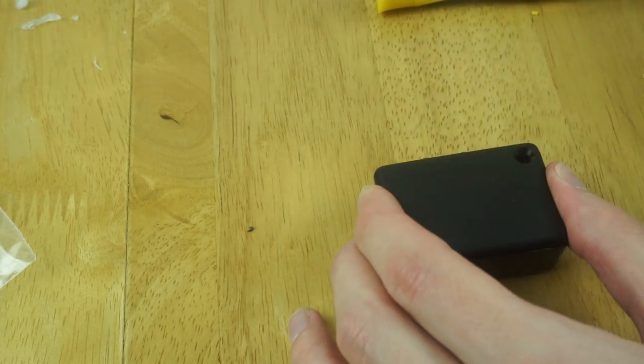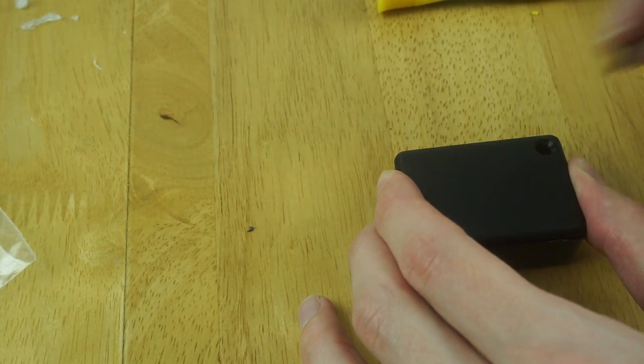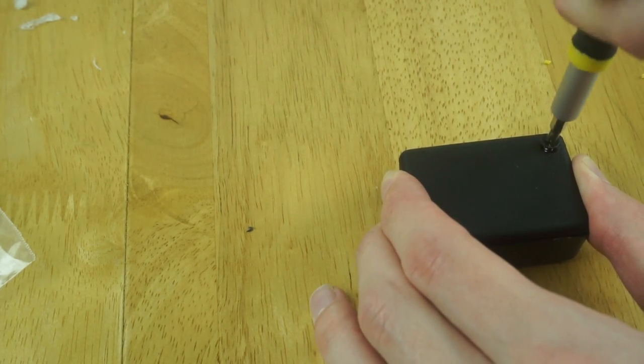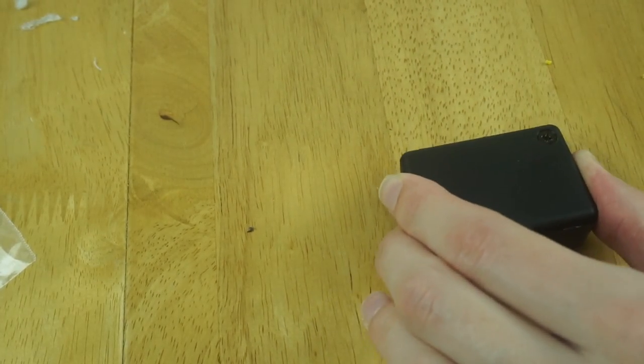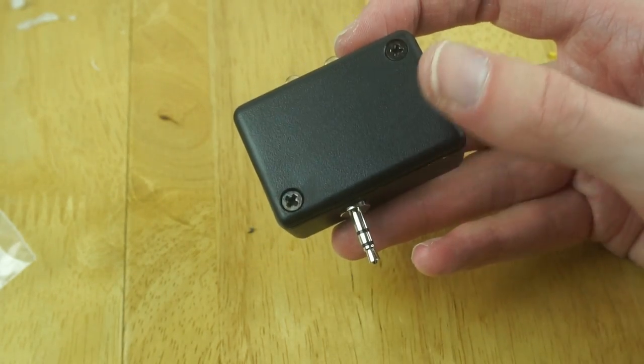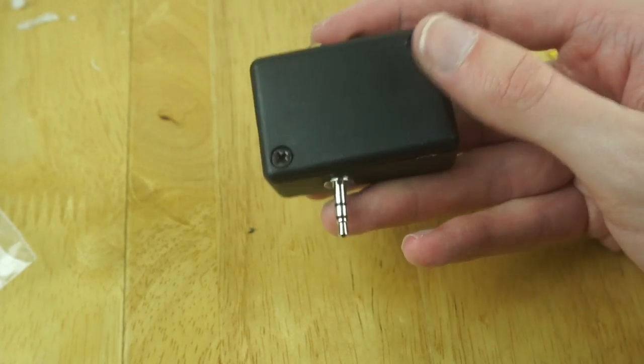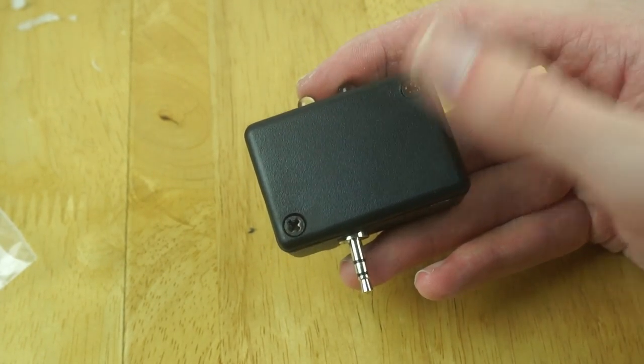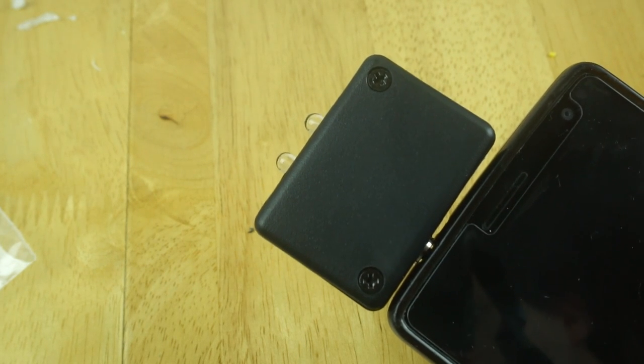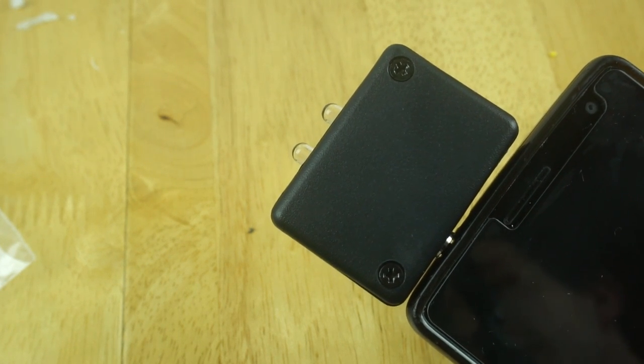So all we now need to do is screw the top back on and then test it out. So the case came with a little top, which is quite nice, and a couple of screws. And we can just screw the top on. So there we have it. That's now the finished product. On the top we have the two LEDs. On the bottom we have the 3.5mm jack. And that all plugs very neatly into my phone like that. So now let's test it out and see if it actually works.